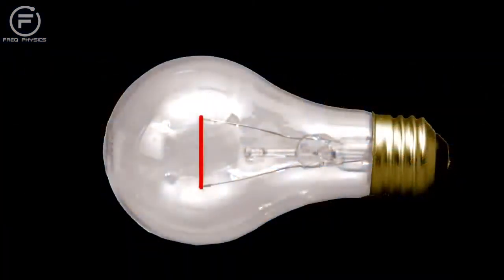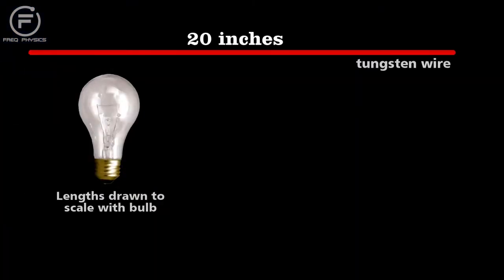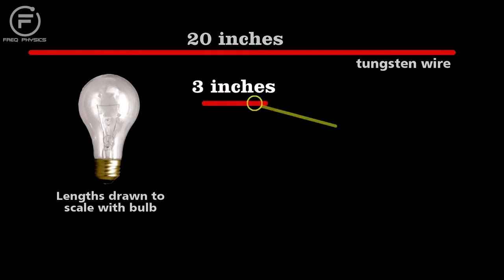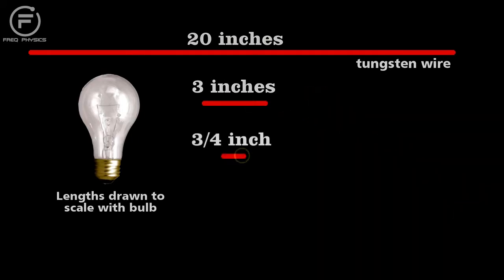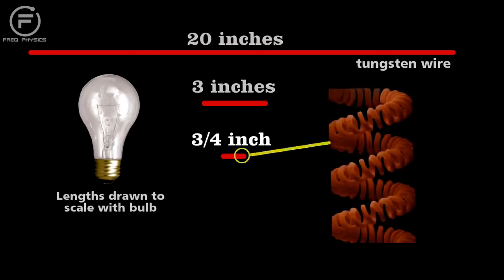The filament starts as a wire twenty inches long and about two thousandths of an inch in diameter. The filament's then wound into a coil with eleven hundred and thirty turns until it's a bit over three inches long and then coiled again to the three quarters of an inch that you see in the bulb. That's the coiled coil I showed you.